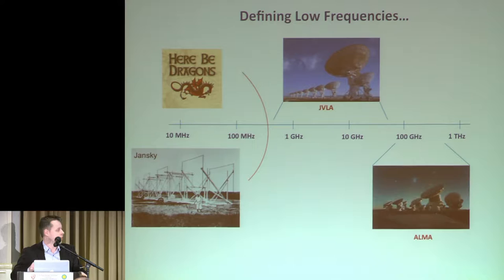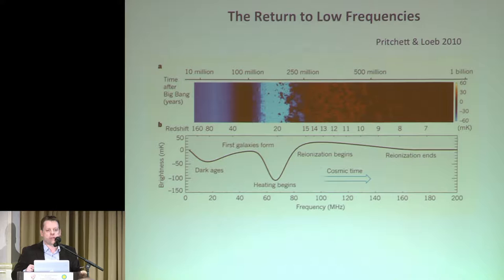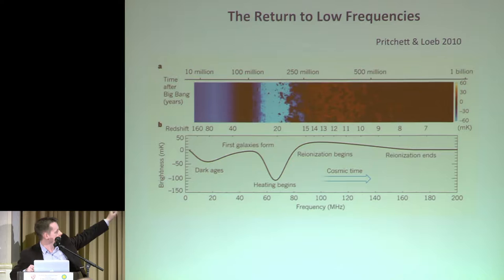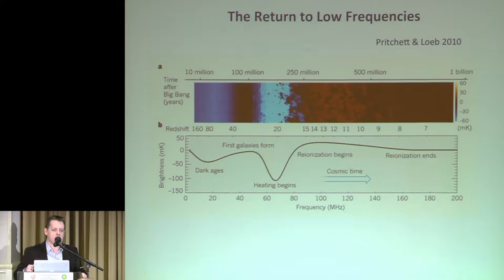However, there is now a resurgence in observations at lower frequencies, motivated largely by cosmology rather than transients — specifically the potential to track the evolution of the IGM in the cosmic dawn and epoch of reionization era. Largely motivated by work by Avi Loeb and others, looking for the variation in brightness temperature of the HI line at high redshift. A plot from Pritchard and Loeb 2010 shows the departure of that line from the CMB temperature across that epoch, demonstrating a lot of potential for cosmology.